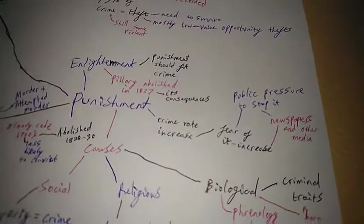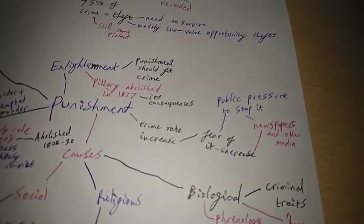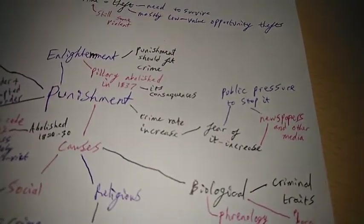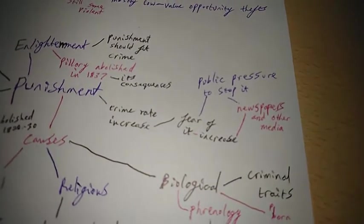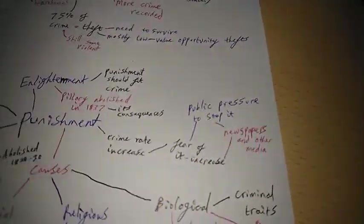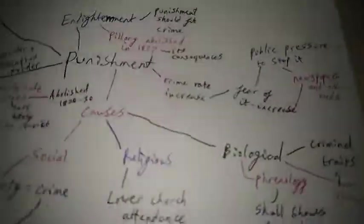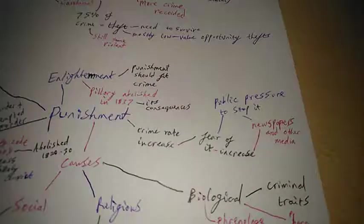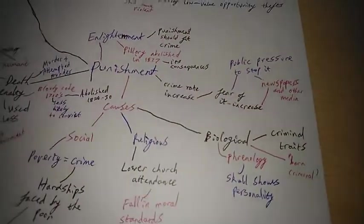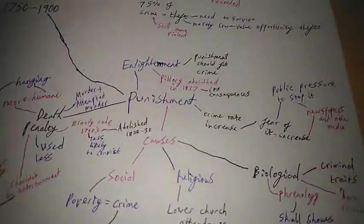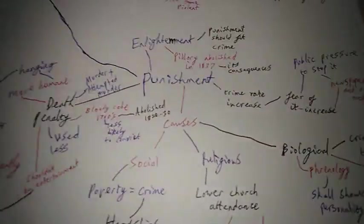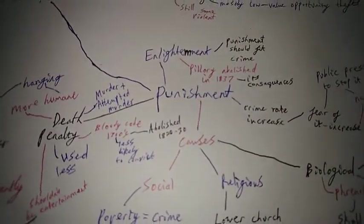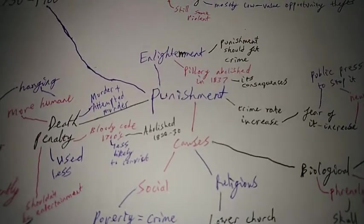Other bits here, punishment. The crime rate increase, that's not just because it increased, it didn't increase that drastically, it's just fear of it increased because there was public pressure for them to stop crime. Like newspapers and other media were created in between this time period so people began to learn about crimes and realise there is a lot of this stuff in the world. They just didn't realise before how much of a massive impact it had on society.